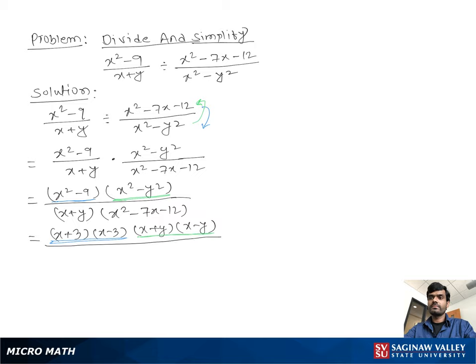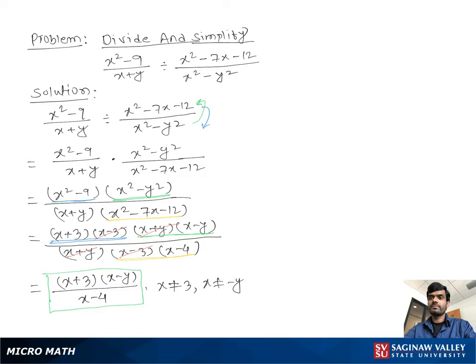The factor of x² - 7x - 12 is (x - 3)(x - 4). We see that (x - 3) cancels with (x - 3), and (x + y) cancels with (x + y). The simplified result is (x + 3)(x - y)/(x - 4), where x ≠ 3 and x ≠ -y.